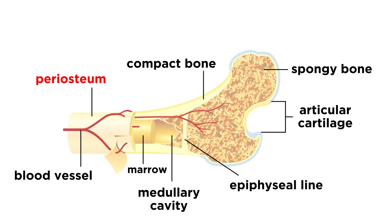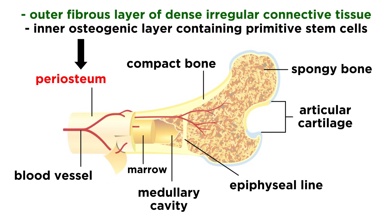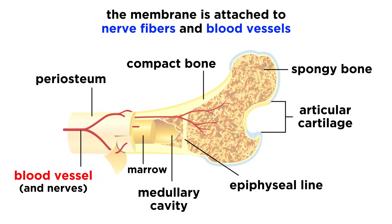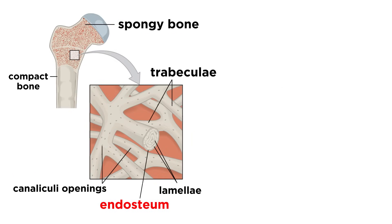A white membrane called the periosteum covers the exterior of the bone, consisting of an outer fibrous layer made of dense irregular connective tissue, and an inner osteogenic layer containing primitive stem cells. This membrane is attached to a network of nerve fibers and blood vessels, which then pass through the shaft to the marrow cavity, and perforating fibers connect the periosteum to the bone. Endosteum covers the internal spongy bone layer, as well as canals that pass through the compact bone.